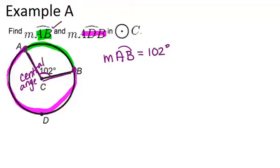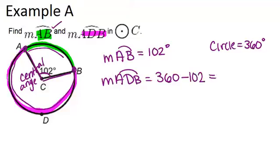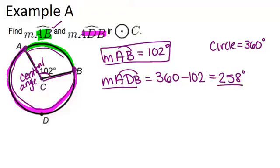Now, a full circle is 360 degrees all the way around. So the minor arc AB plus the major arc ADB must equal 360 degrees. If arc AB is 102 degrees, we can do 360 minus 102 to get the measure of arc ADB, which gives us 258 degrees. So arc AB equals 102 degrees and arc ADB equals 258 degrees.